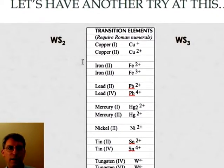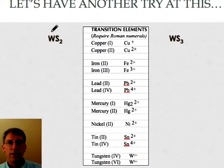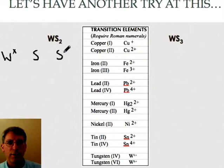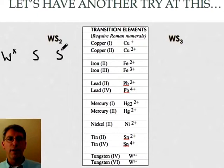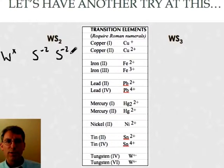So let's try another one of these. So here we have tungsten which is W and sulfur. So what we have is tungsten and we don't know its charge but we know we have two sulfurs. And sulfur is in oxygen's family so it's going to take a minus two charge. So what charge would the tungsten have to take in order to give me a total charge of zero?